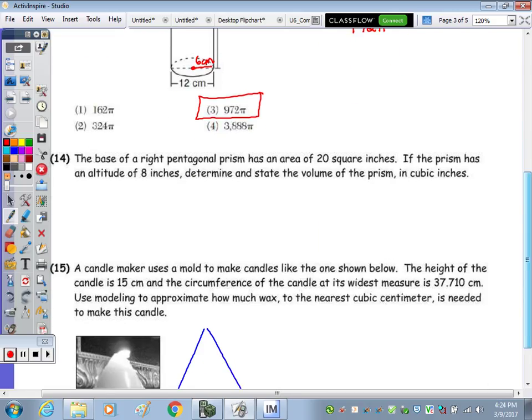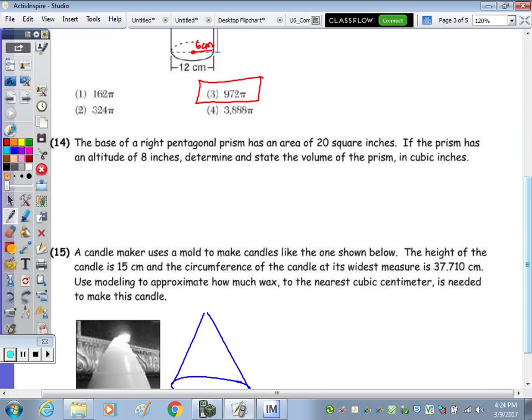Problem 14: the base of a right pentagonal prism has an area of 20 square inches. If the prism has an altitude of 8, determine and state the volume of the prism. Volume for any prism is the area of the base times the height. Since it gave you the area, the base has an area of 20 square inches, we substitute 20 for the base area and substitute a height of 8. 20 times 8 gives us a volume of 160 inches cubed.